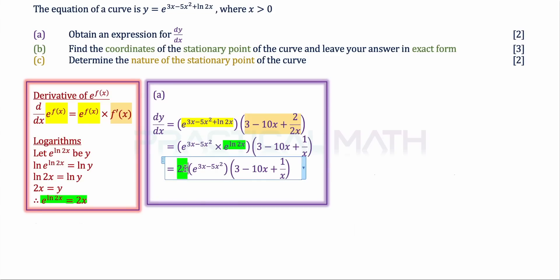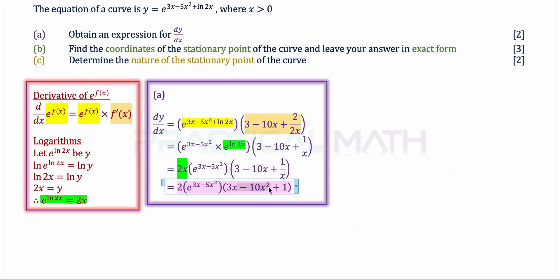With e to the power of ln 2x simplified to 2x, we factor out 2x. Inside the first bracket we have e to the power of 3x minus 5x squared, and we multiply through by x: 2 remains, 3x times x gives 3x, negative 10x times x gives negative 10x squared, and 1 over x times x removes the fraction leaving plus 1. That is the answer for part A.